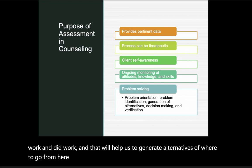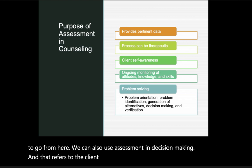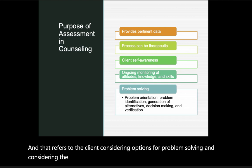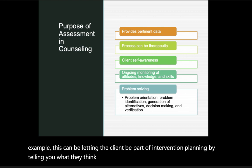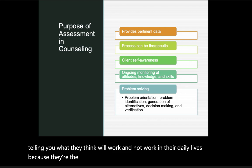The fourth stage is decision making, which refers to the client considering options for problem solving and the consequences of each option they generate. For example, letting the client be part of intervention planning by sharing what they think will or won't work in their daily lives — because they are the expert in their own lives and the counselor is there to facilitate their goals.